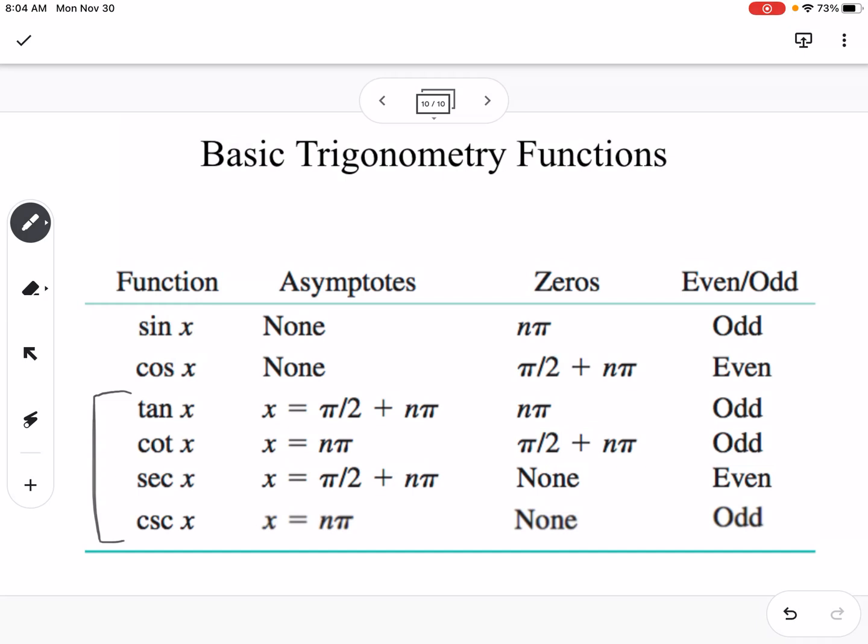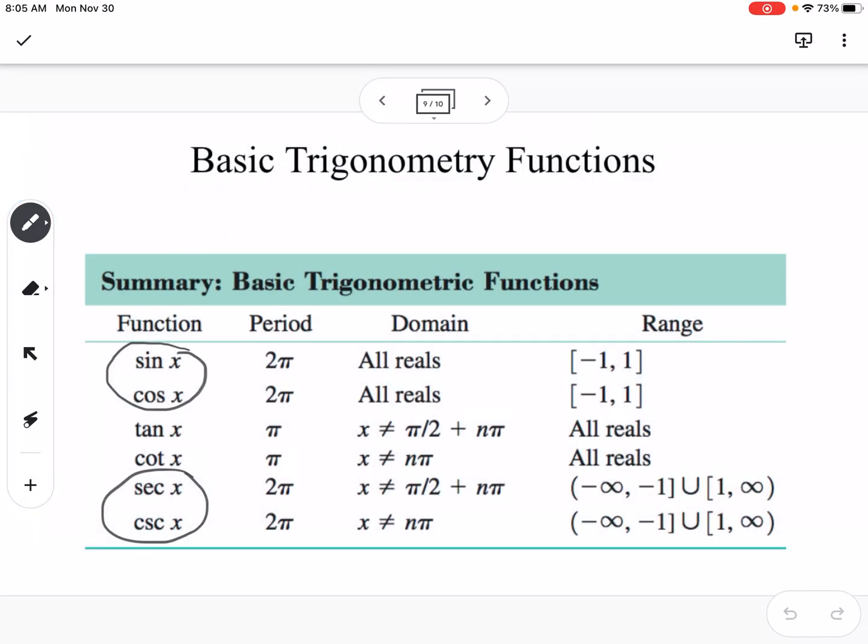And then to find the zeros, this helps us locate the zeros and how we find one zero, and then because it's periodic, we can just add pi or subtract pi to find the next one. So again, this is here if you want to pause it and write it down, but I did an abbreviated version of this table in the notes as well.